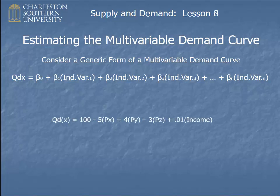Here's a multivariable demand equation that we used in an earlier lesson, and so you can see that this is the constant term, 100. There's no variable attached to it. Then this, minus five, is beta one, and px is the independent variable one. Then the number four is beta two, py would be independent variable two, minus three, don't forget the negative sign, is beta three, and then pz is independent variable three, and so forth. There's income, our last term.